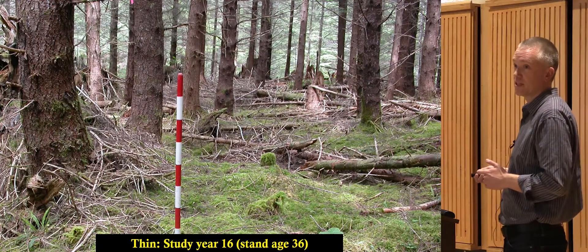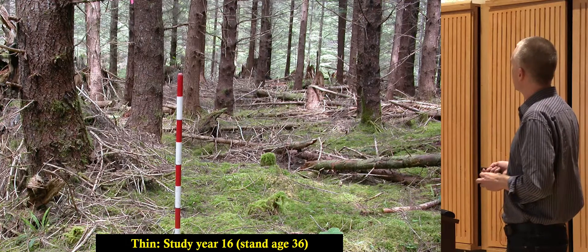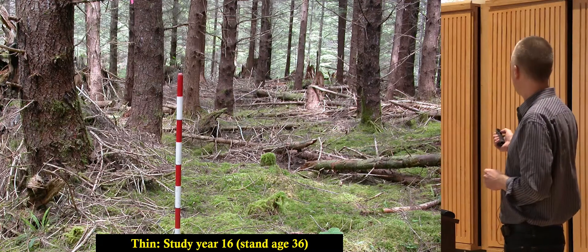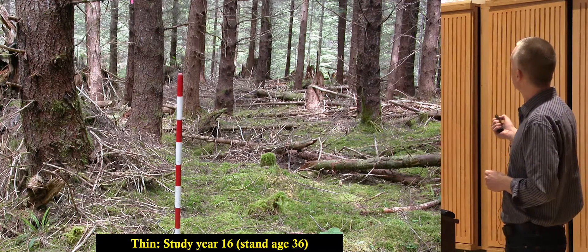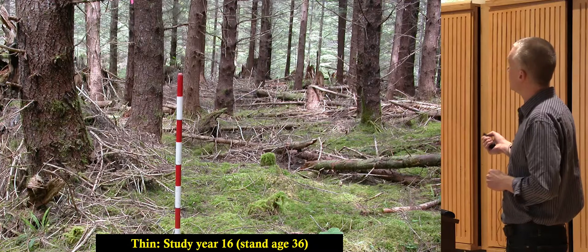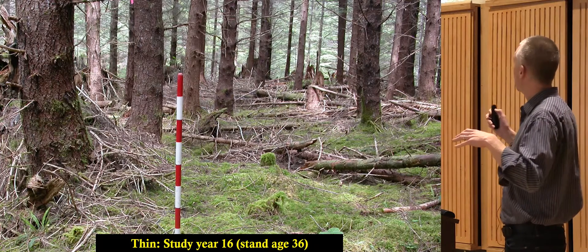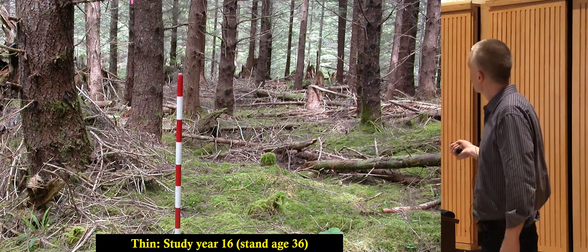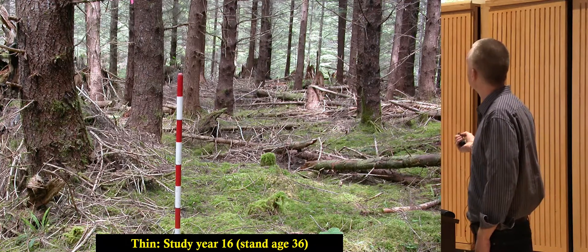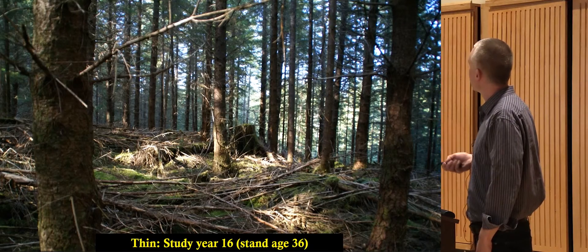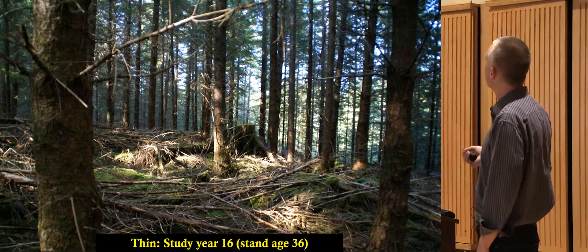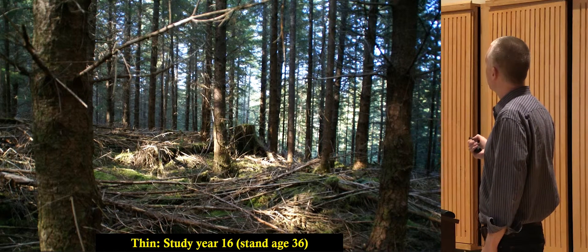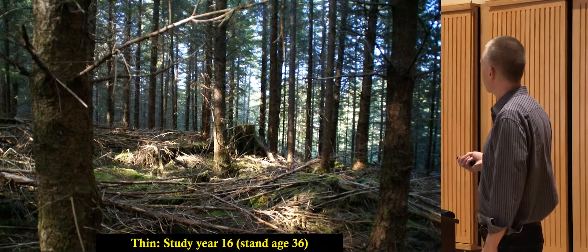Here's our standard thin treatment, a typical pre-commercial thin that left 300 trees per acre. By 16 years after treatment, the trees are developing pretty nicely, but they've filled in that canopy. You have very little light reaching the forest floor. We have some moss, one fern and one trillium in the understory. Looking at another site, it's the same story. 16 years after treatment, pretty dense forest canopy and very little in the understory.